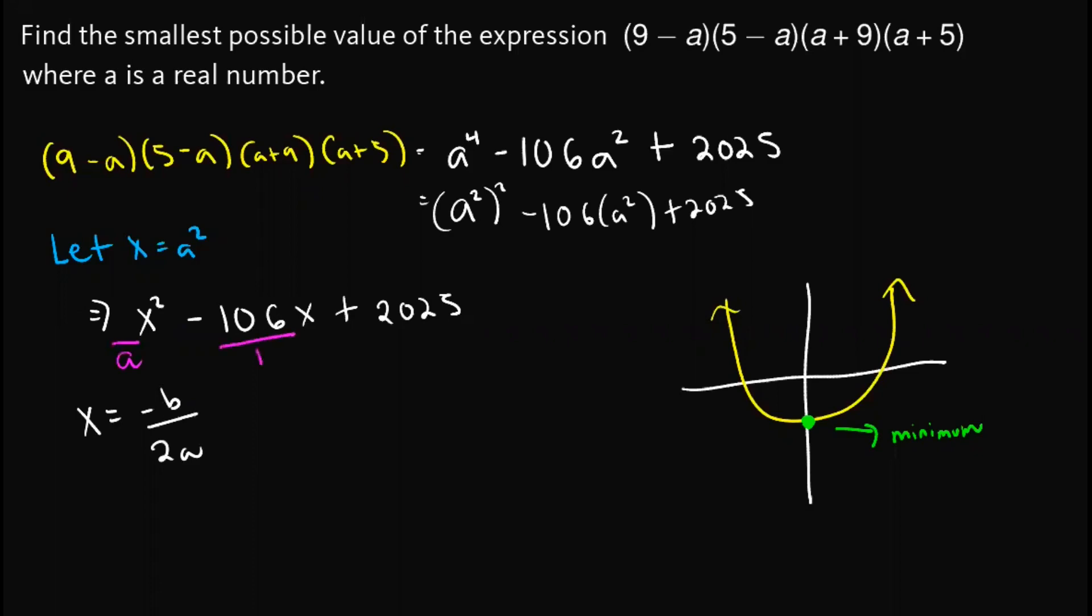So this one is simply negative times negative 106 all over 2 times a is simply 1 out here.